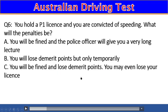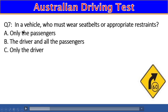Question 7: In a vehicle, who must wear a seat belt or appropriate restraints? A) Only the passenger, B) The driver and all passengers, C) Only the driver. The right answer is B — the driver and all passengers.